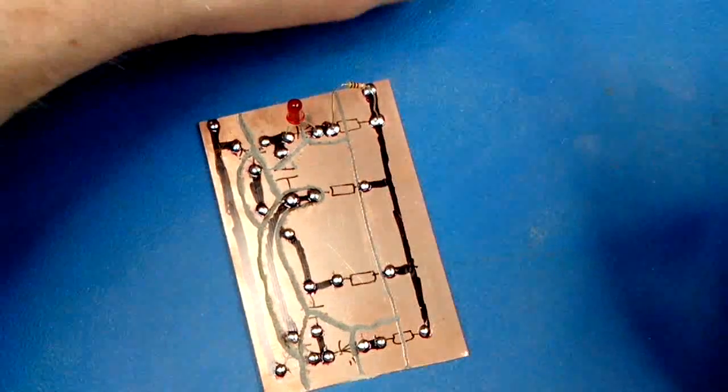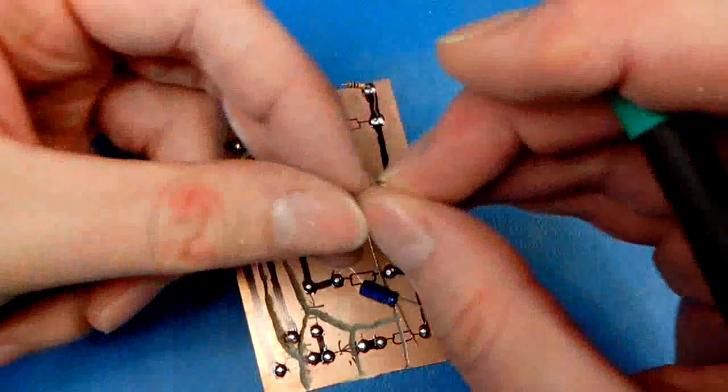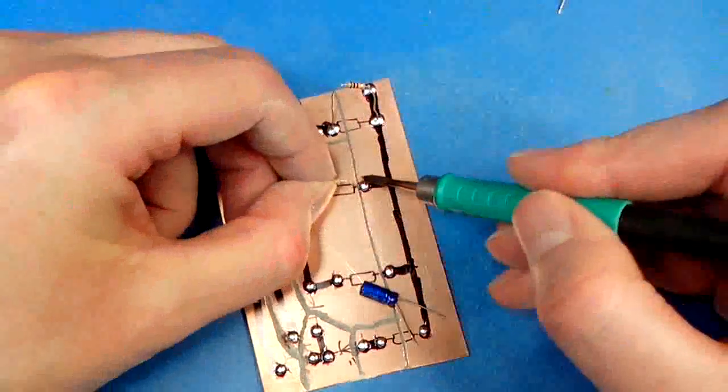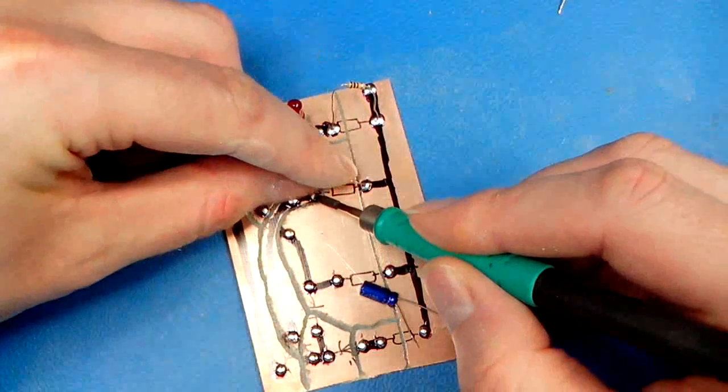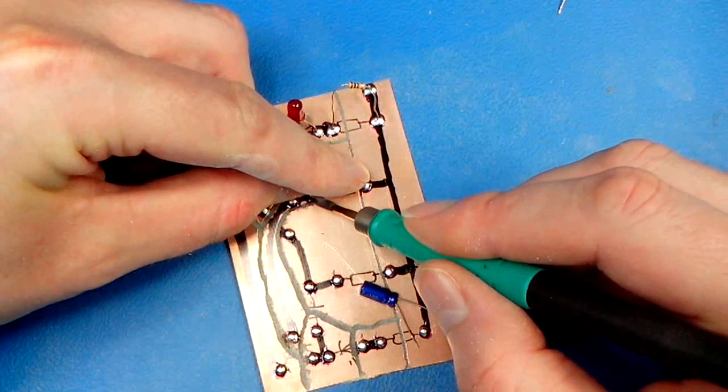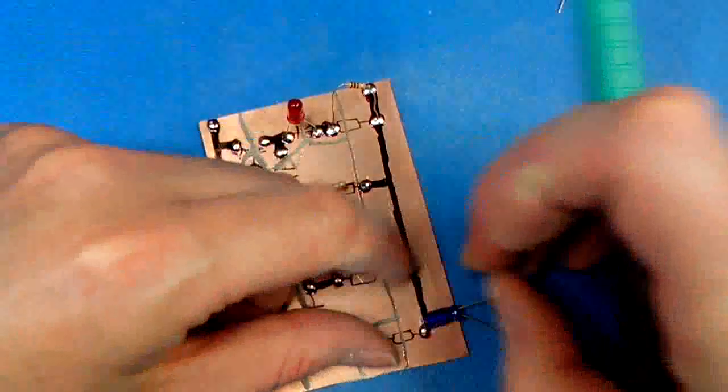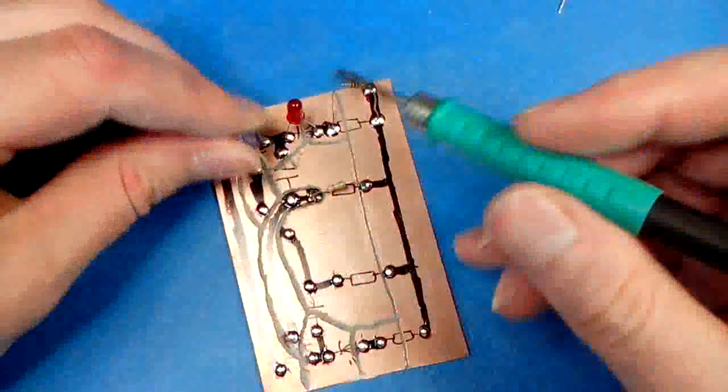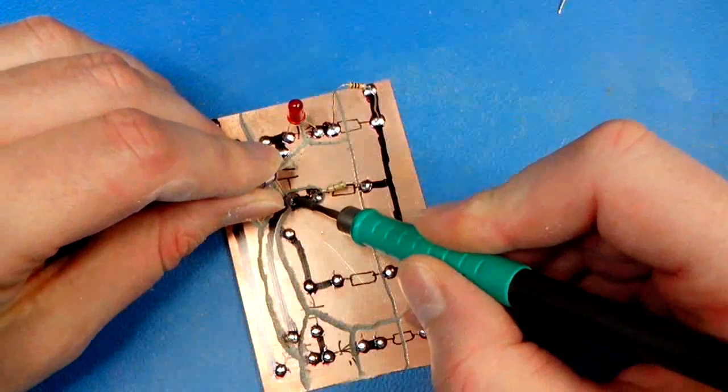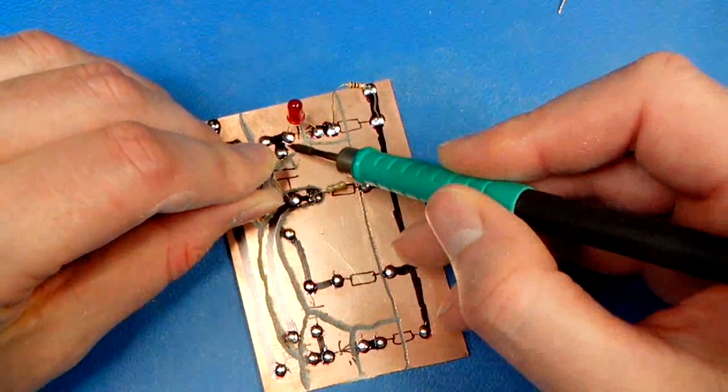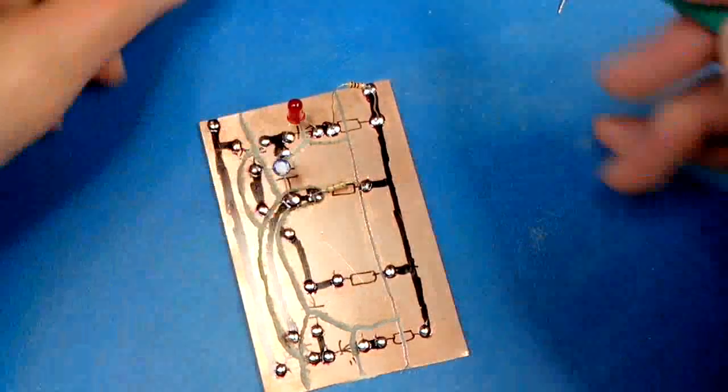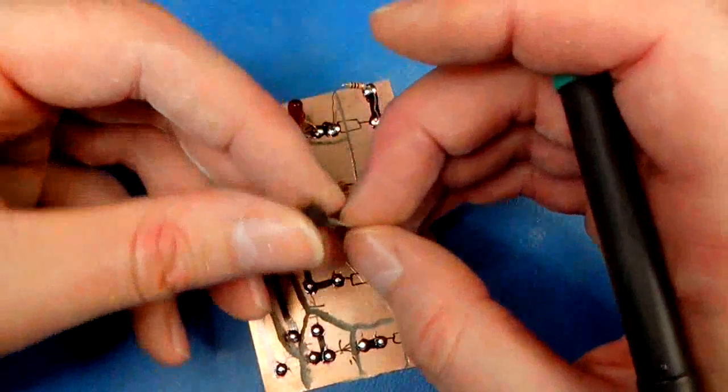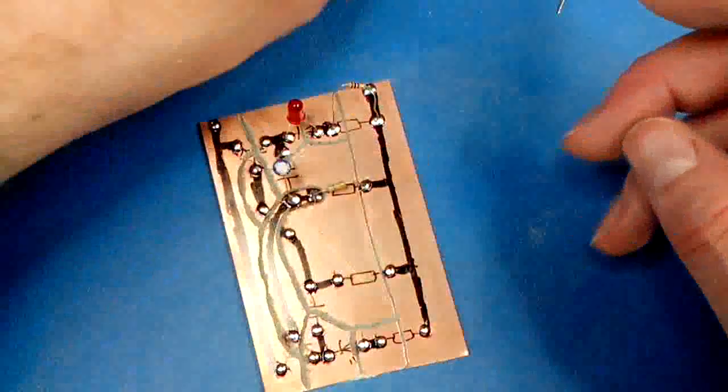What I find is if you use vero board, the vero board imposes a way that you have to make your circuit. You have to work with the vero board. By using this method, you can make the board look whatever way you want.